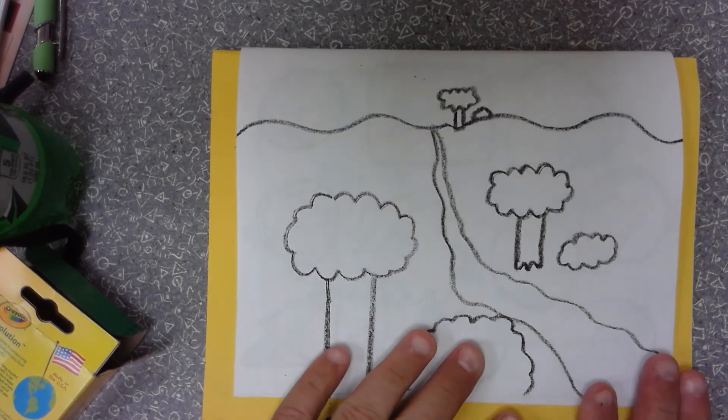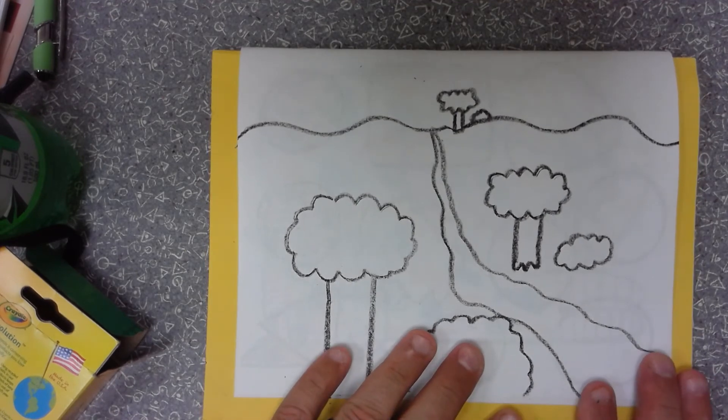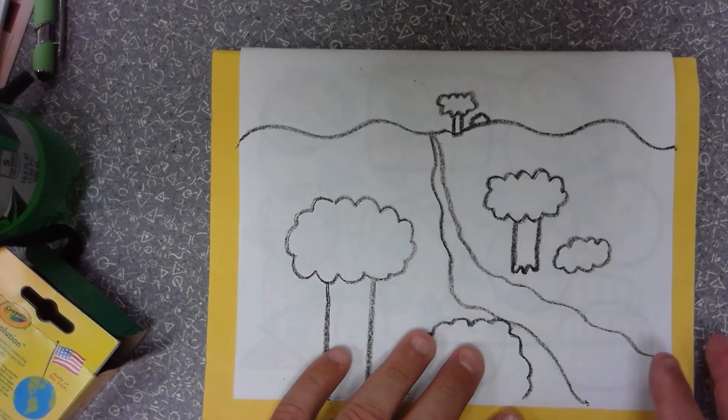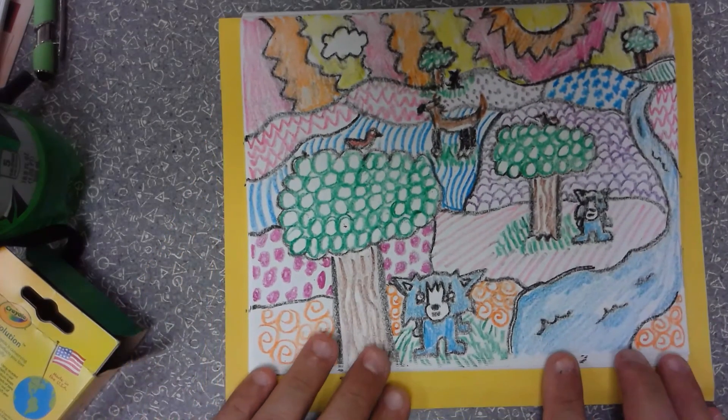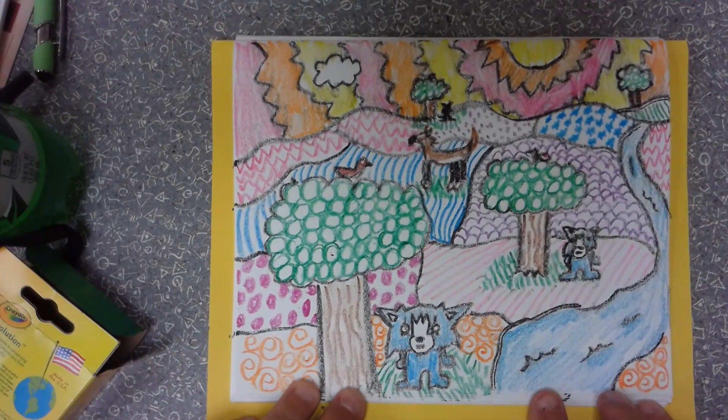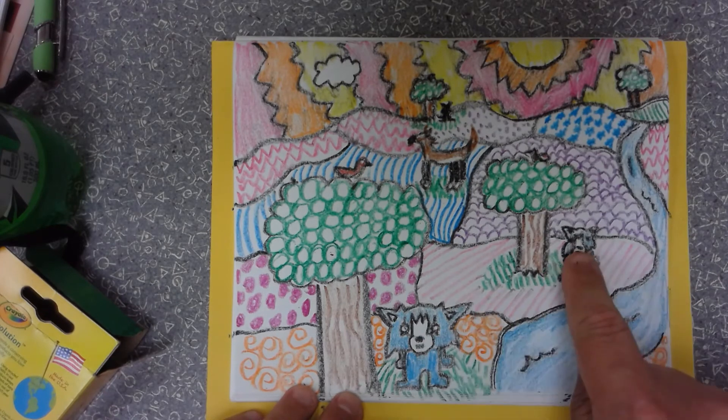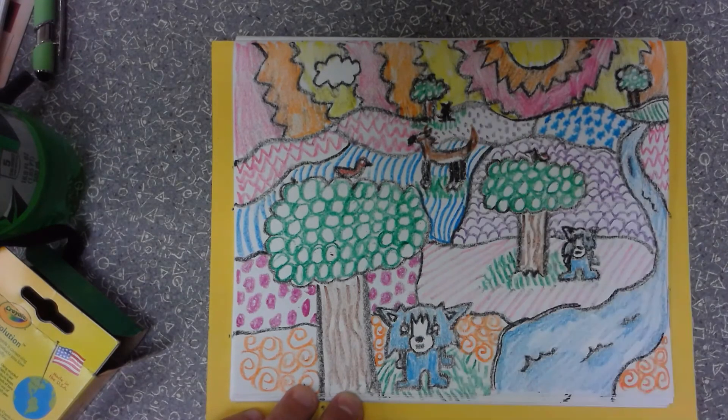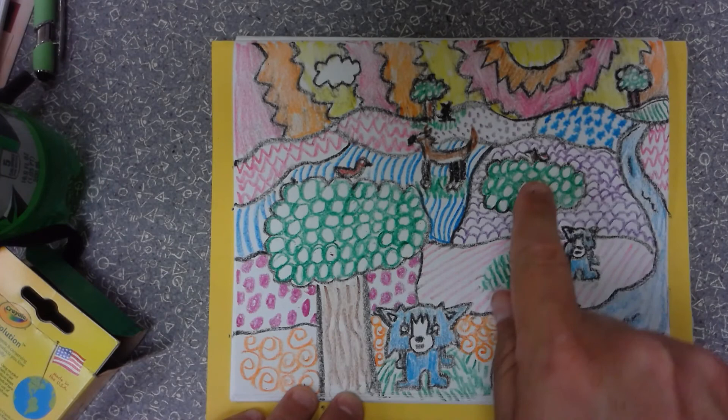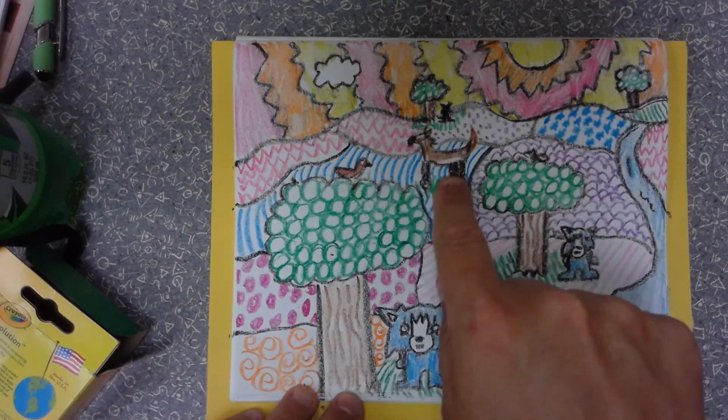Add as many details as you can and then color it in. You can color it with just plain color or you can use patterns. Here's an example I did earlier with the class. I started with the three trees just like we did before, and then I added the details—dogs, birds, the horse halfway back.